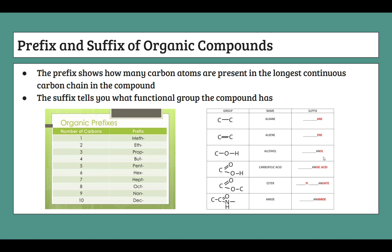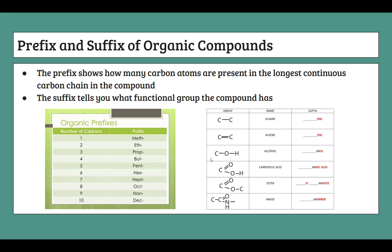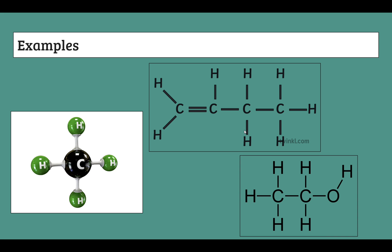Now let's do some examples. For the molecule on the very left: it has one carbon, no double bonds, and no other functional groups — no O–H, no double bonds. With only single bonds and one carbon, the prefix is meth- and the suffix is -ane for an alkane. So this is methane.